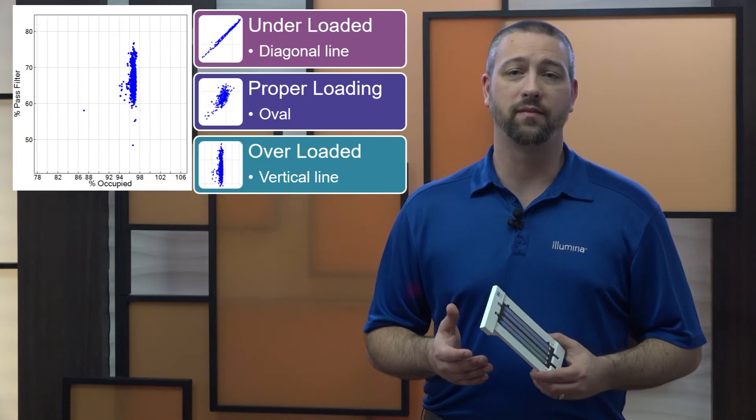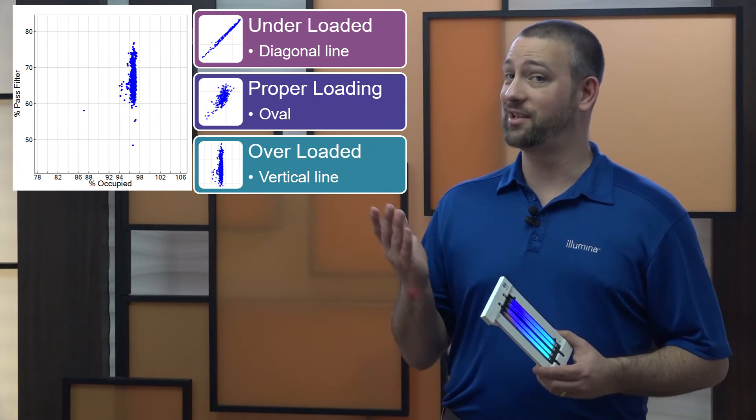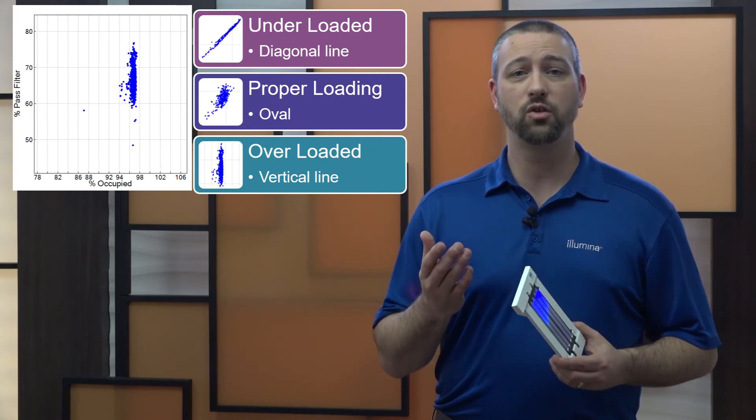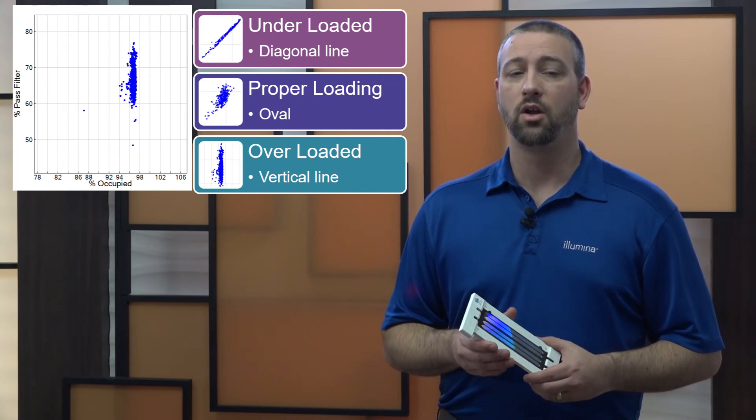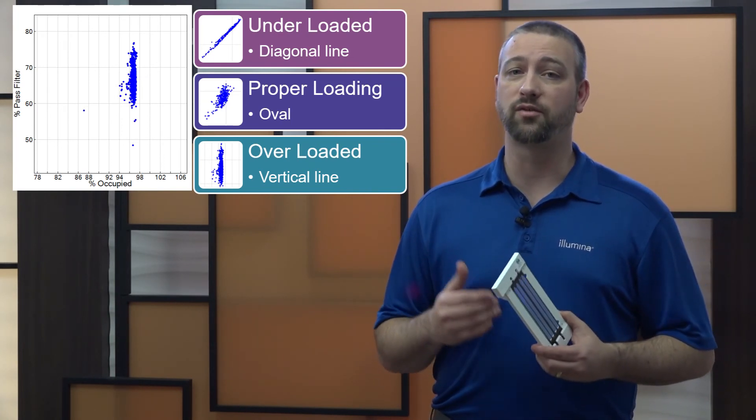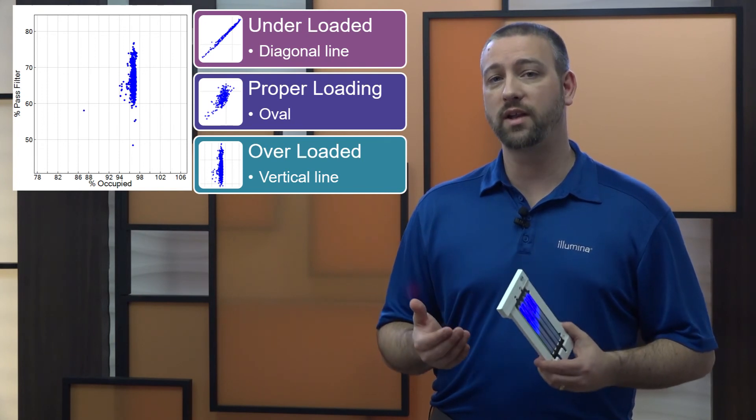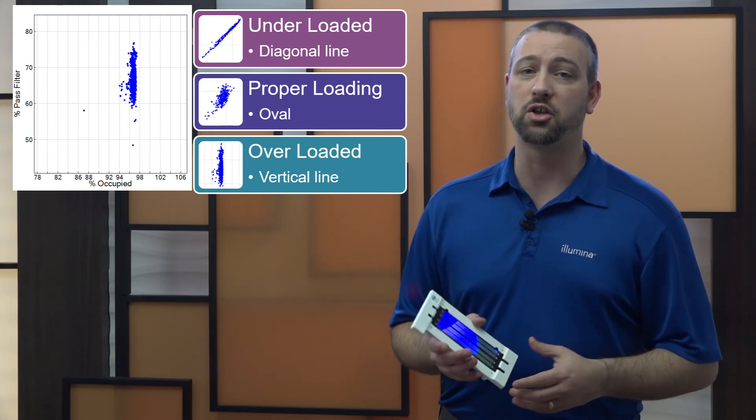Compare your percent PF versus percent occupied plot to these examples. If you find your run appears to be under or overloaded, adjust the loading concentration accordingly. Also, make sure to review guidelines for library QC and quantification discussed in the Cluster Optimization Overview Guide.